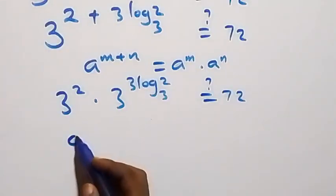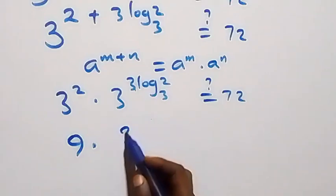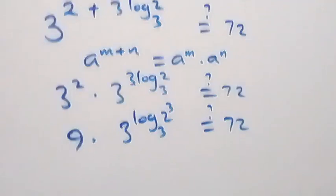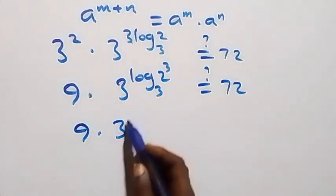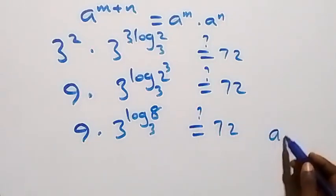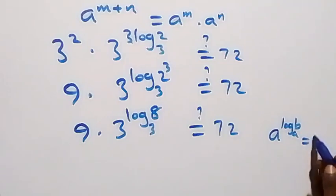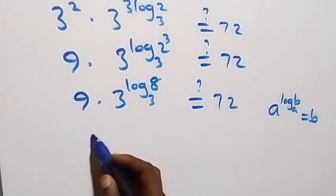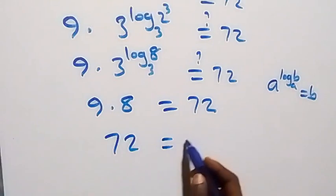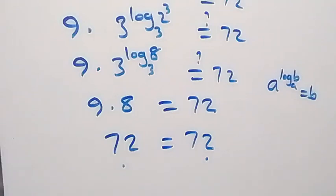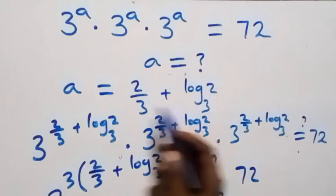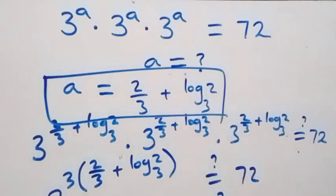3 squared is 9. Then, reversing the power law, we have 3 raised to power log(2 raised to power 3) base 3, equals 72. Using the identity a raised to power log b to base a equals b, we get 9 times 8 equals 72. And of course 9 times 8 is 72, which equals 72 on the right-hand side. Left hand side equals right hand side, so a equals 2 over 3 plus log 2 base 3 satisfies the given problem.